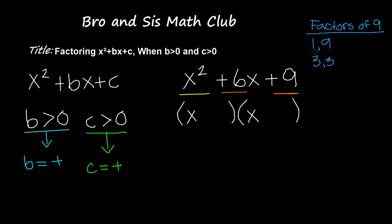So these are the four factors. 1 times 9 gives us 9, but when added together it gives us 10, so these are not the two factors we're looking for. Then we have 3 and 3 — 3 times 3 does give us 9, and when added does give us 6. So we're going to use the two factors of 3.